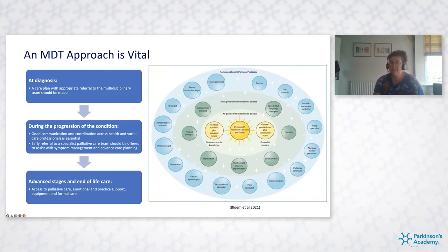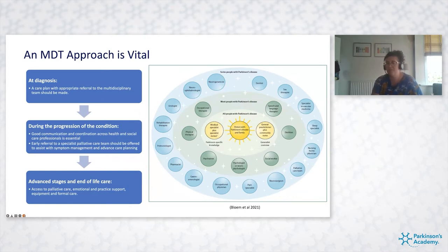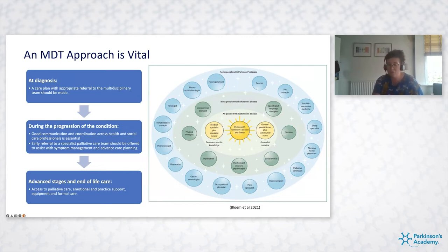Looking at the diagram from Bloom, it shows the patient and family need to be at the centre of their care, with many other health professionals involved. We can't all be experts, so it's important to know who to refer to and where to find them. Good communication between the family is vital, along with clear communication and documentation between health professionals. It's important to talk to patients about what other care professionals are available and how they can help — it's quite a collaborative approach.